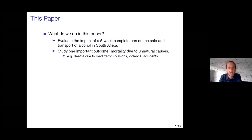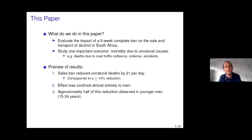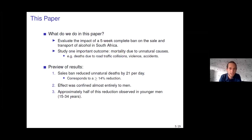Mortality due to unnatural causes refers to deaths due to things like road traffic collisions, violence, accidents, suicide, and things like this. To give you a preview of the results: the sales ban essentially reduced the number of unnatural deaths occurring in South Africa by 21 per day. This is a substantial reduction in unnatural mortality, corresponding to a 14% reduction in all unnatural mortality in South Africa. We will argue that this is actually a lower bound of the impact of the ban.